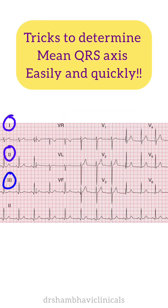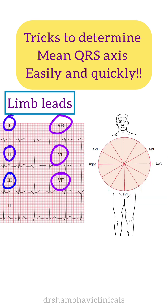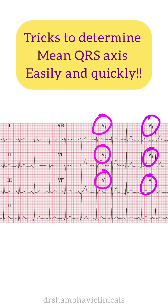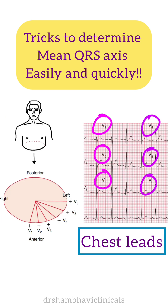In the 12-lead ECG, leads 1, 2, 3 and leads AVR, AVL and AVF are called limb leads. They record the electrical activity in the frontal plane, while leads V1 to V6 are called chest leads. They measure the electrical activity in the horizontal plane.